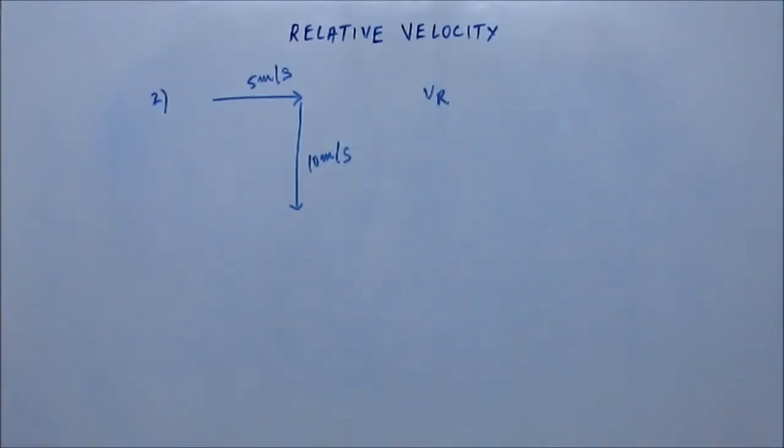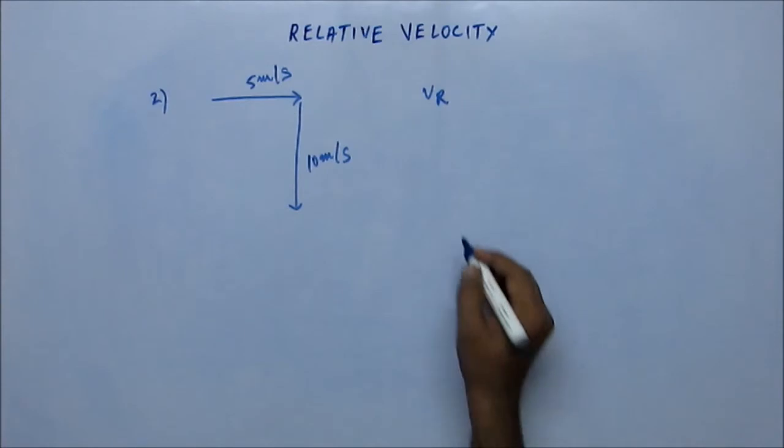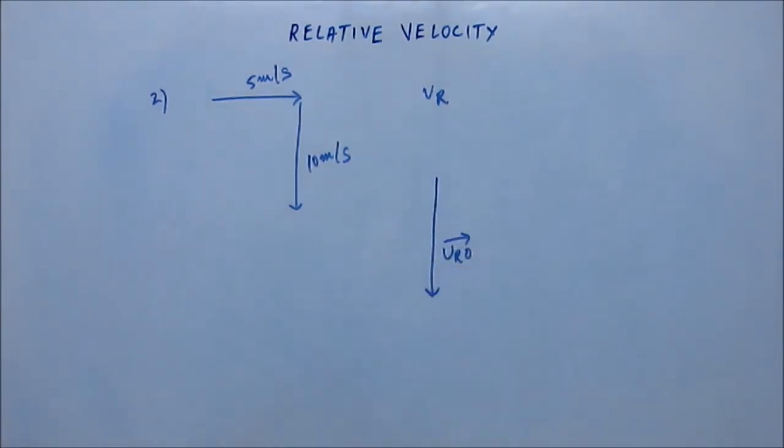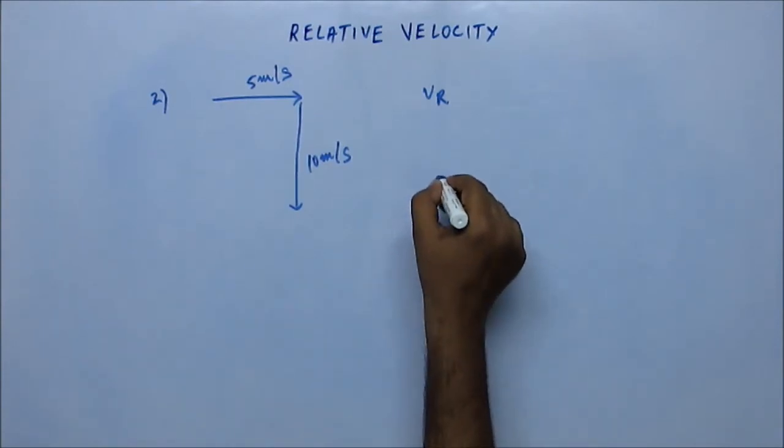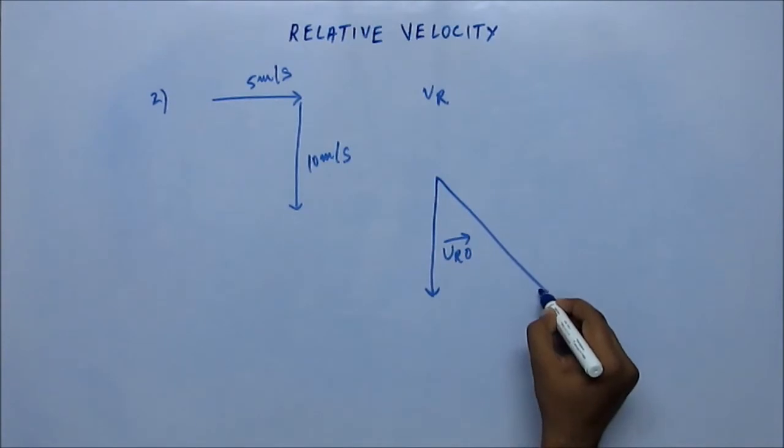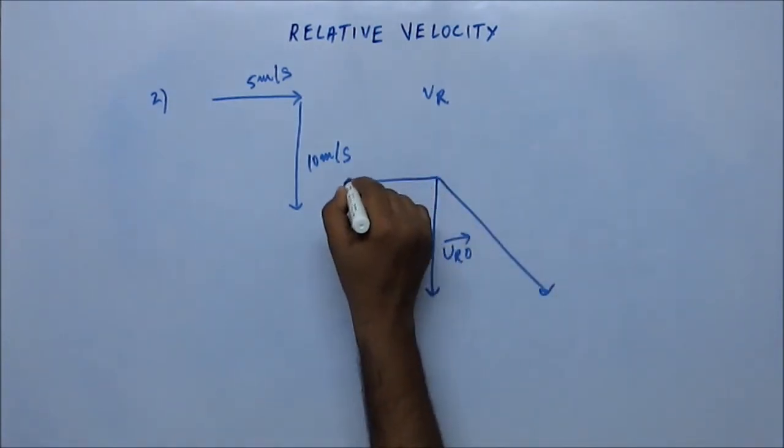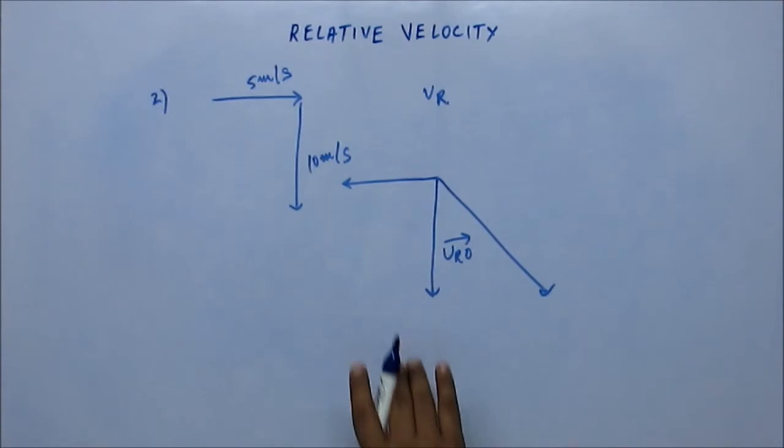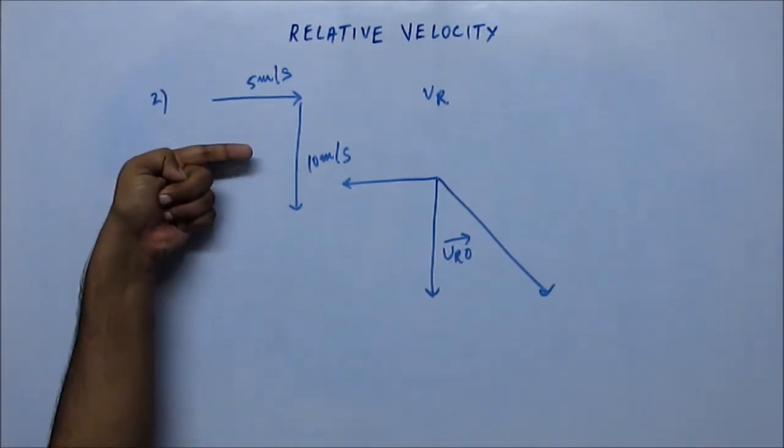Solve it orally. Try to draw the vector triangle in your mind. It may take some time but actually it will sharpen your brain. So don't use pen and paper, try to do it orally. Again, you just have to draw the vector triangle. This is the velocity of rain with respect to observer, that should equal velocity of rain minus velocity of observer.